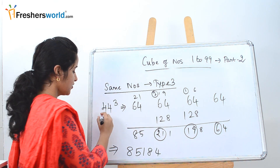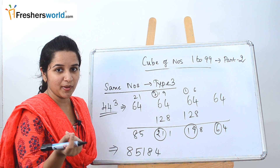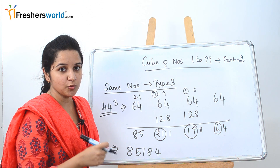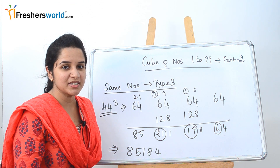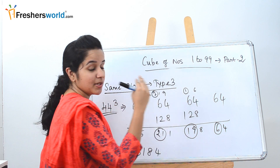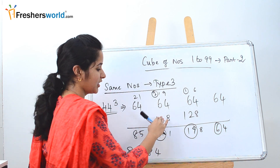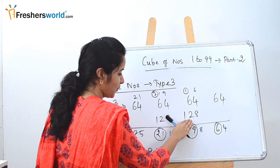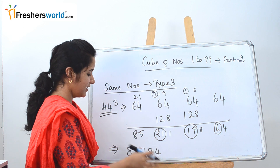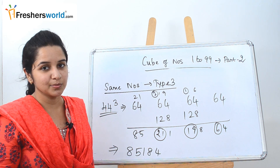To summarize what we did for 44 cube: take the digit given in the question and cube it — 4 cube is 64. Write it across all four positions. Multiply the middle two digits by 2 to get 128 and 128. Then add all the columns just like in the other types, and you will find the answer. It is as simple as that.